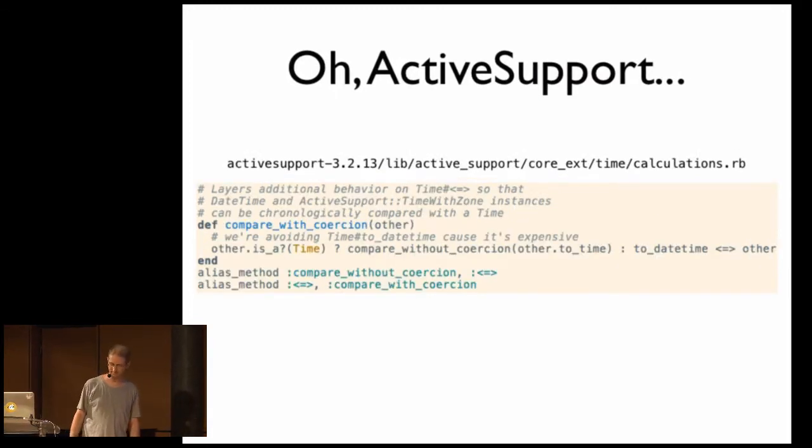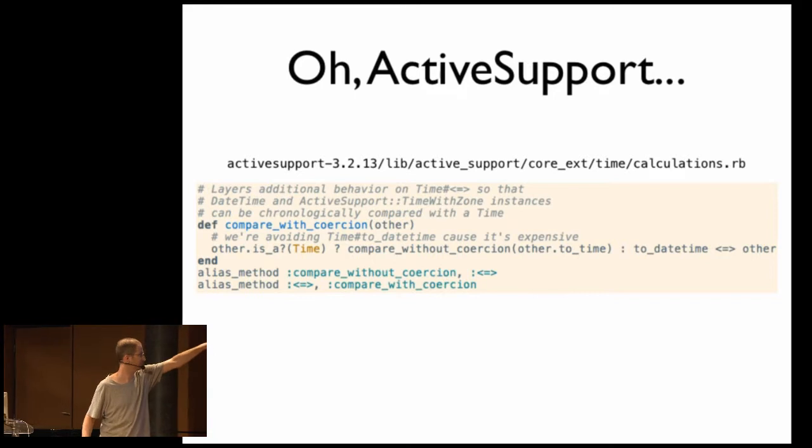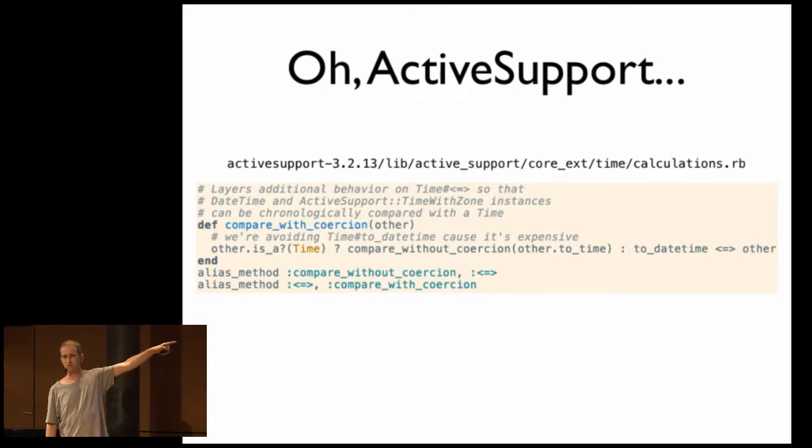Oh, but in time, the spaceship operator is redefined using this alias method chain style where we're using this compare with coercion, right? So we're checking to see if the thing we're comparing to is a time. If it is, then we're going to do the regular comparison, the regular spaceship operator that we alias below, right? If not, then we're going to convert ourselves to a date time and do a comparison to the other, right? So that goes back to that definition that we saw one slide ago where date times are converting other things to date times to do the comparisons. But you remember time with zone redefined isa. So if other happens to be a time with zone, we're going to go through the first branch, not the second.